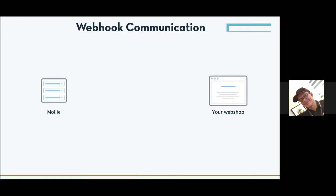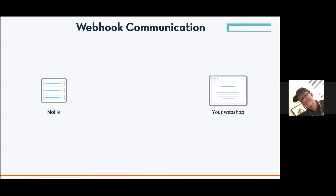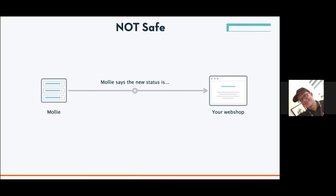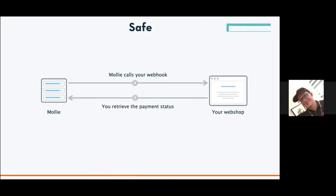Looking more closely at the webhook communication: Mollie calls your webhook, you retrieve the payment status, and Mollie moves on. You look up the ID in the database to confirm it exists, retrieve the new status, then update it. You might think it would be easier if Mollie just said 'the new status for this ID is X' — but that's not safe; anyone could send you that message. The whole idea is that Mollie calls your webhook, you look it up, confirm it's safe, confirm it exists, confirm you expect the status to change, and only then retrieve the new payment status. That is secure.